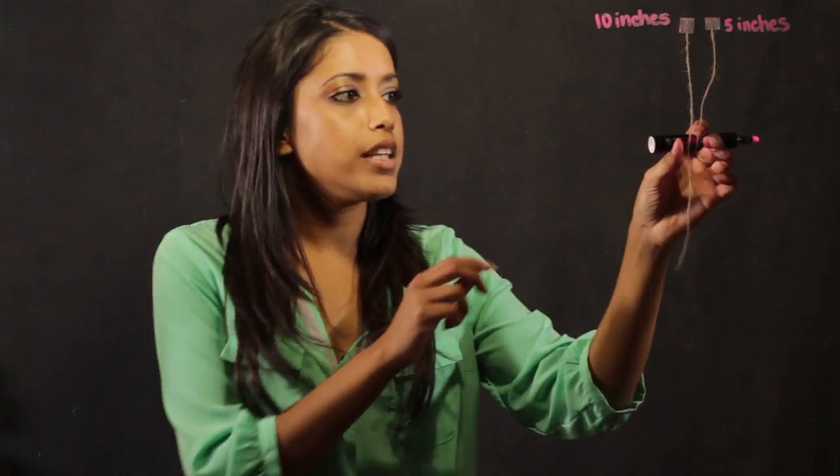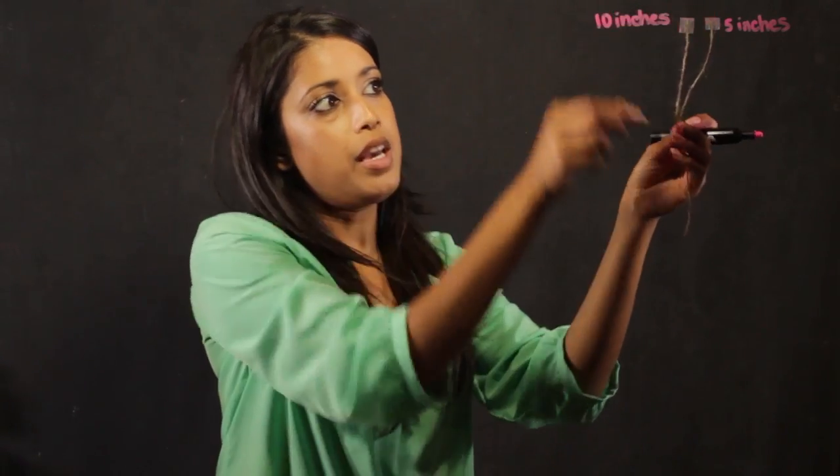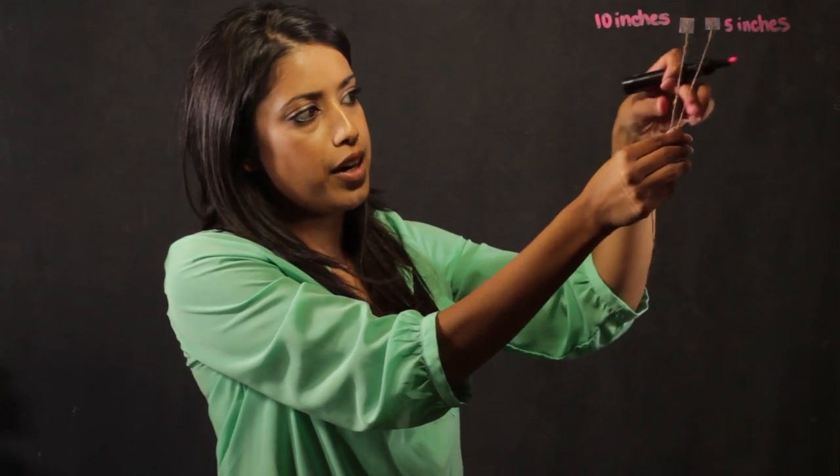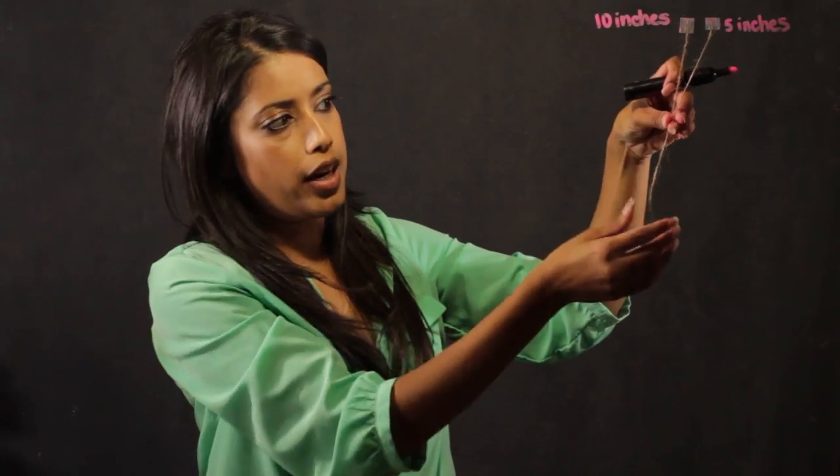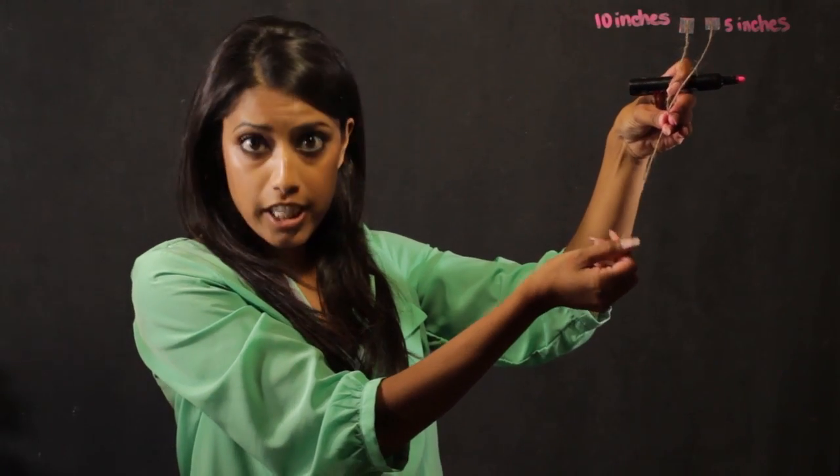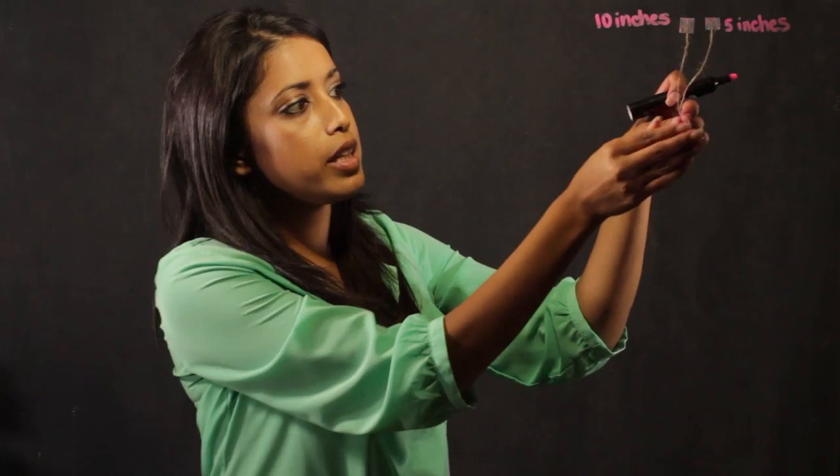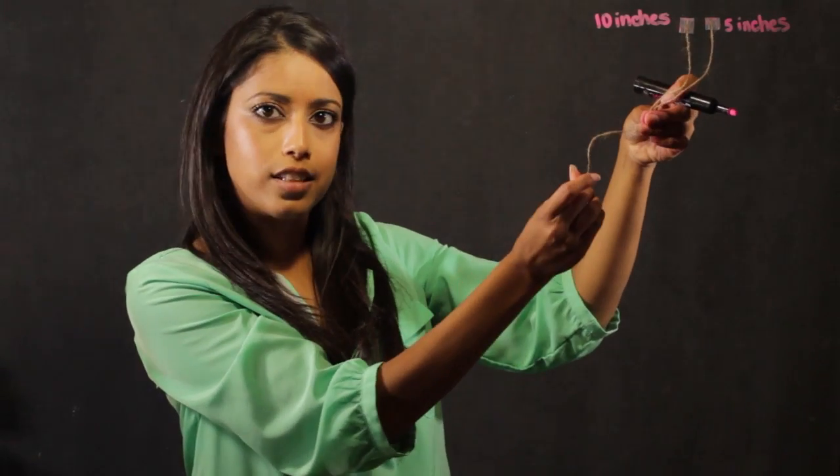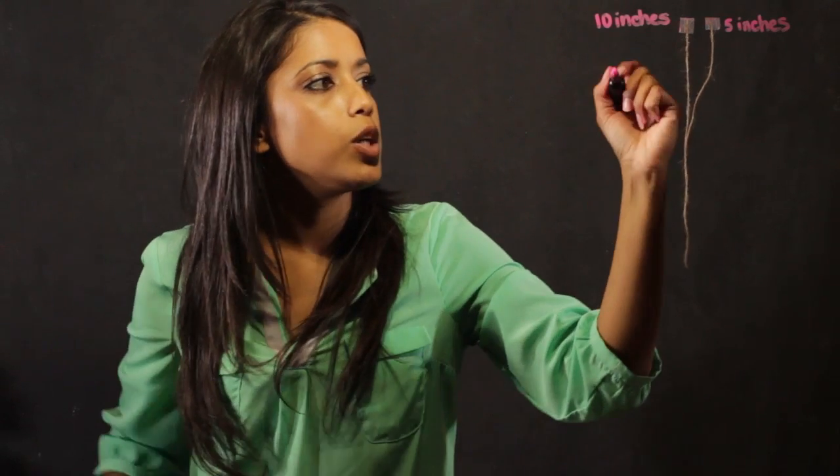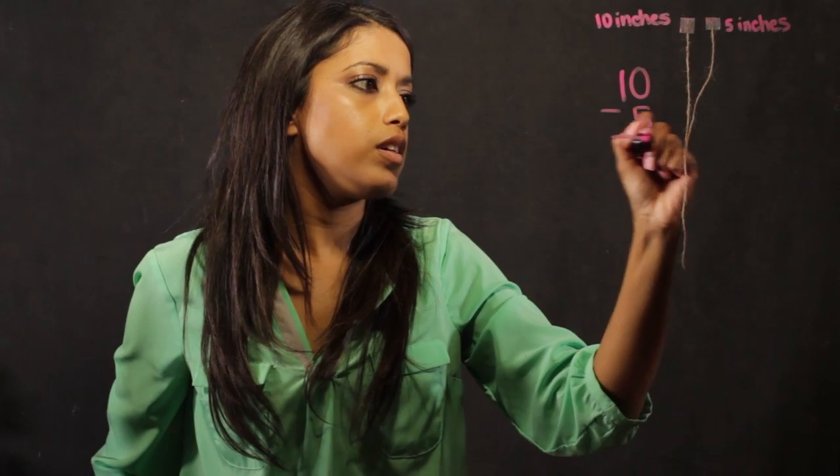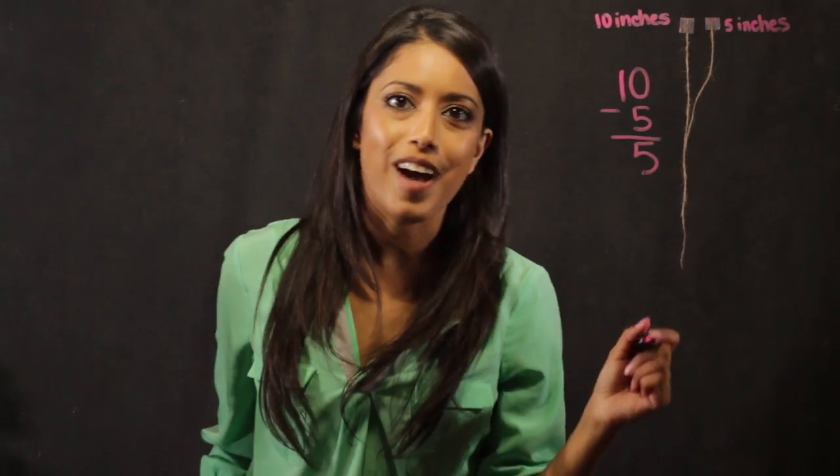And what the Greeks would do is they would take the two strings and overlap them, and take the part that they have in common, which is all this area up here, and essentially disregard it. And any remaining length is the answer to the subtraction problem. So basically what they did was just cut all this part off, and whatever was left, that's the answer to their subtraction problem. So it becomes 10 minus 5 is equal to 5.